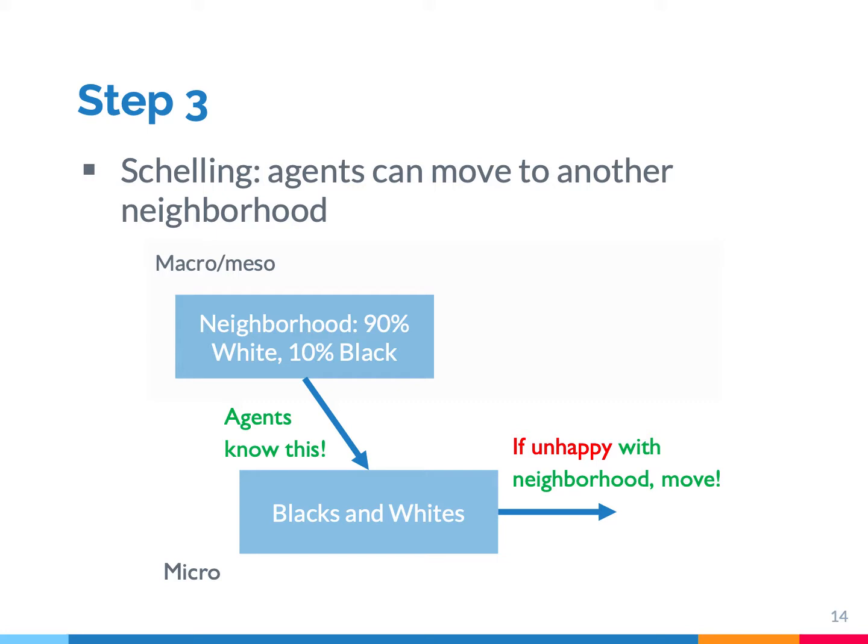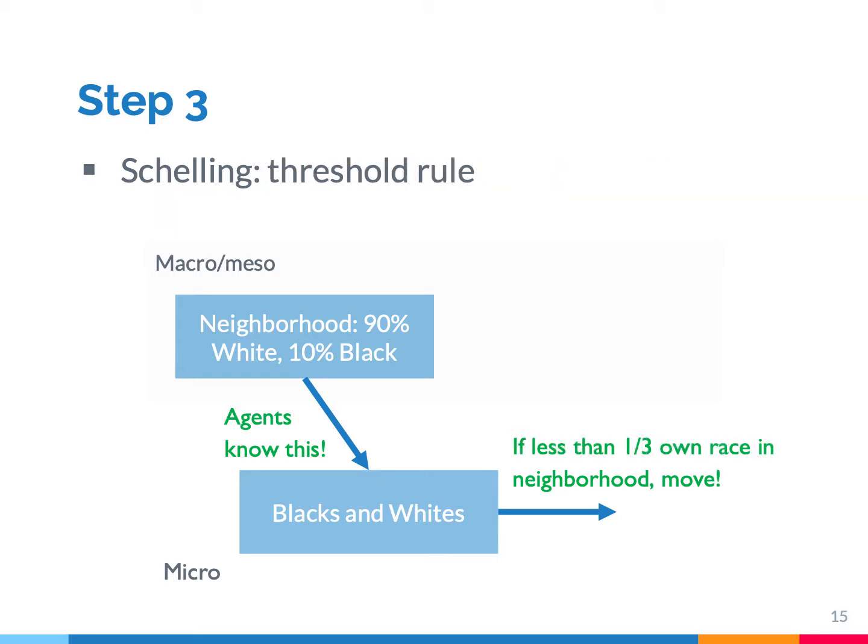You can wonder when people would become happy or unhappy about the racial composition of their neighborhood, so the model has to be very explicit about this. What the Schelling model assumes is that people have only mild in-group preferences. Specifically, people want to live in a neighborhood with more than one-third of the neighbors being of the same race. That's the threshold. If less than one-third of their neighbors is from the same race, they move to another neighborhood.